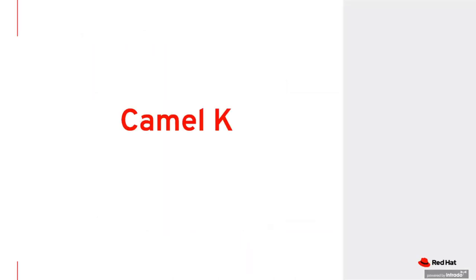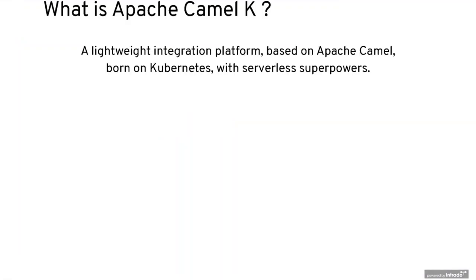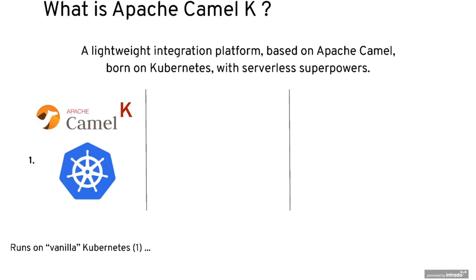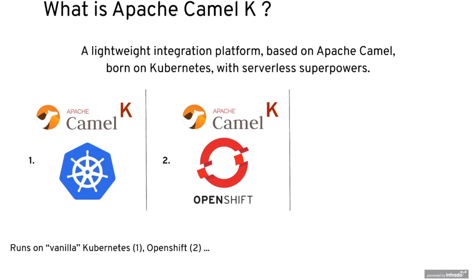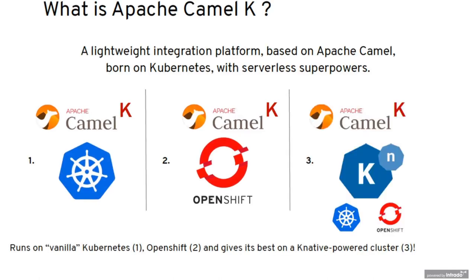Speaking of the cloud, we have the new product CAMEL-K. CAMEL-K is a lightweight integration platform based on CAMEL, born on Kubernetes with serverless superpowers. You can run it on vanilla Kubernetes, but also on OpenShift. You get the best power with CAMEL on a K-Native-powered cluster, which you can install on Kubernetes or OpenShift.